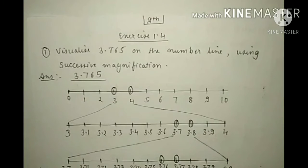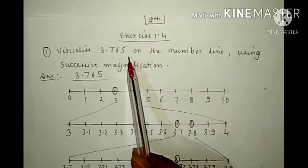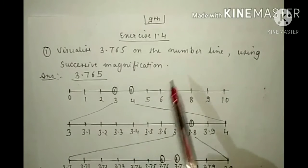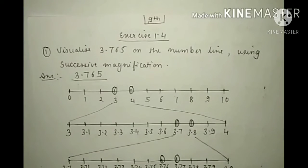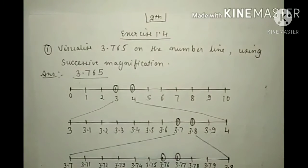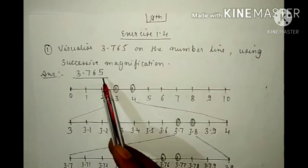Now we will start our next exercise 1.4. See the first question: visualize 3.765 on the number line using successive magnification. We have to mark this number 3.765 on the number line. First, note that this number is greater than 3 and smaller than 4.